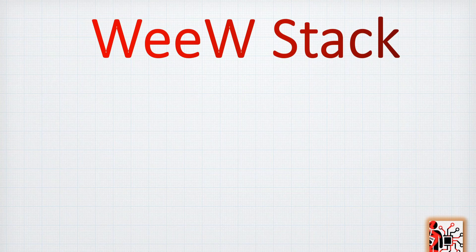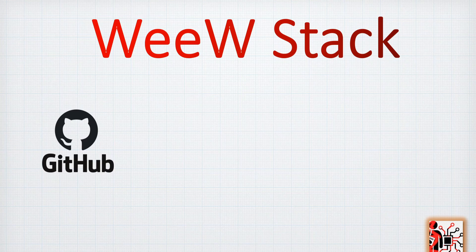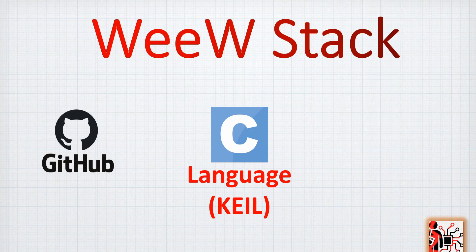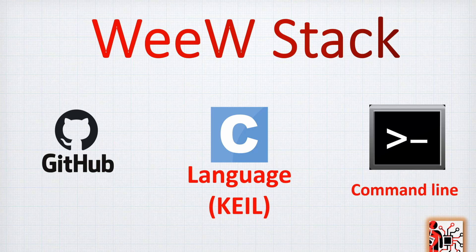As usual, the code we are going to share in this video is available on GitHub — you can find the link in the description below. The main language we'll use is C, however we are going to use Keil uVision 5 to program, build, and load into the STM32F1. Finally, we'll use a little bit of command line with Python to convert BMP files to the format we can insert into the Nokia screen.